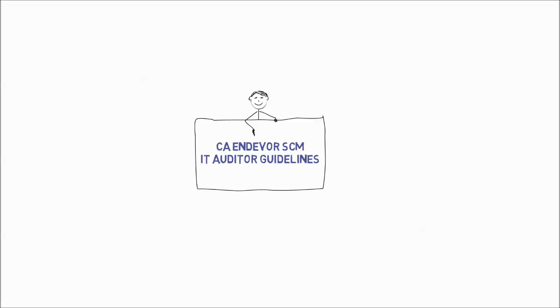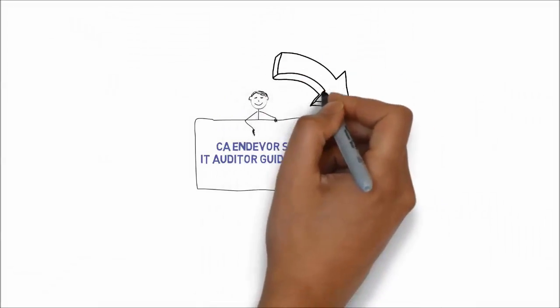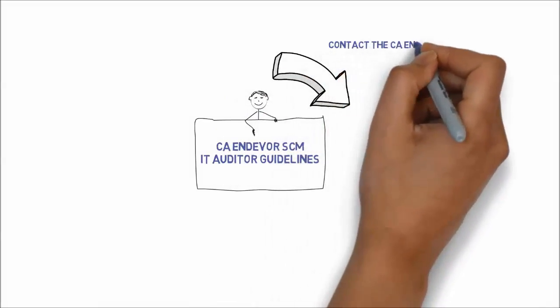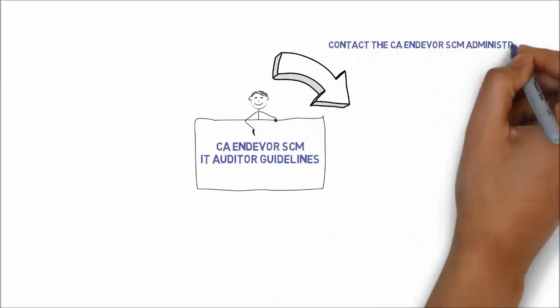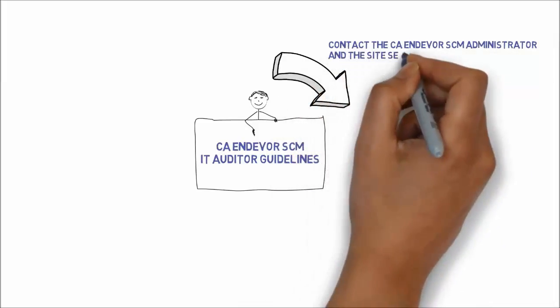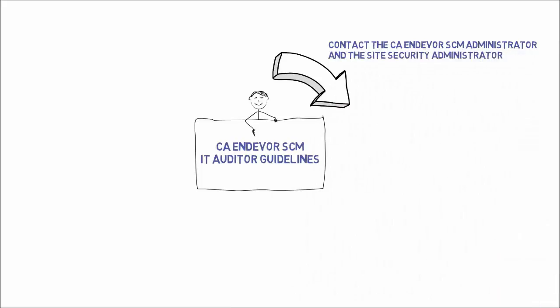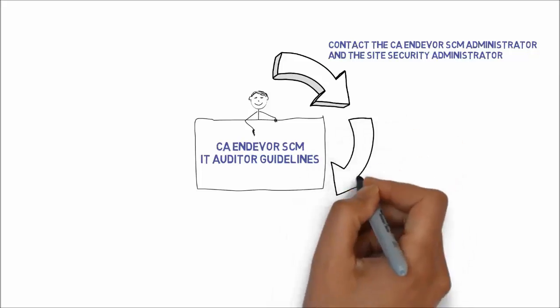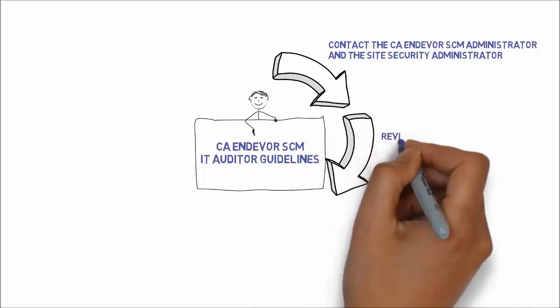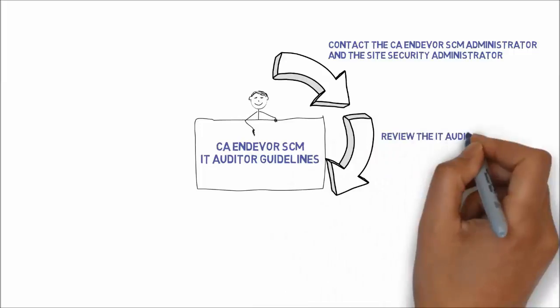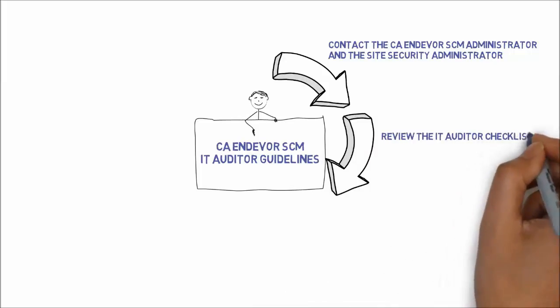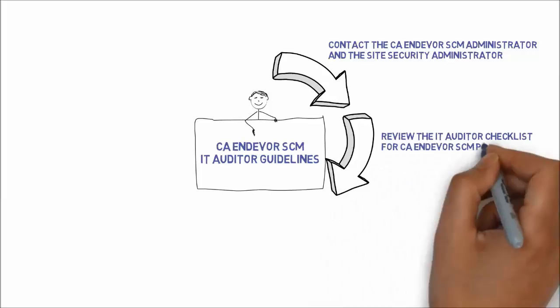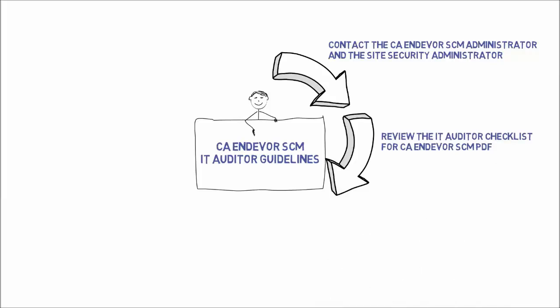The guidelines recommend that the auditor follow these steps. Number one: contact the CA Endeavor SCM administrator and the site security administrator who will help you with the audit. Observe them run the reports listed in the report resources for an IT audit section of the guidelines. Number two: download or print the IT Auditor Checklist for CA Endeavor SCM PDF. The checklist lists questions that you should answer about each audit area, and you can use the checklist to record any anomalies.